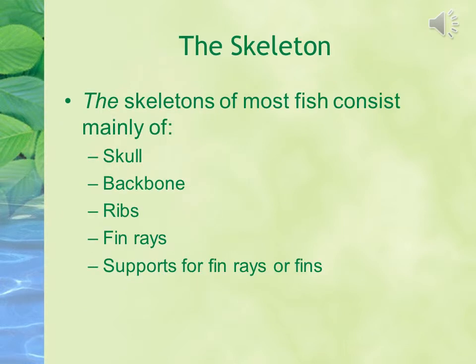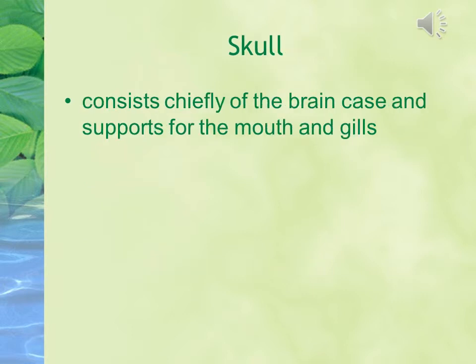The skeletal system of most fish consists mainly of the skull, backbone, ribs, and fin rays. The skull consists chiefly of the brain case and supports for the mouth and gills.